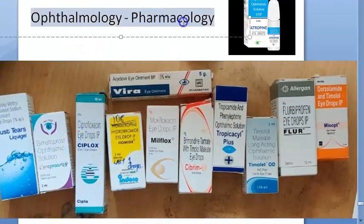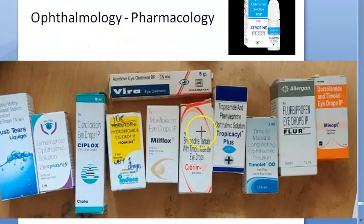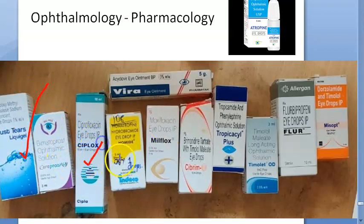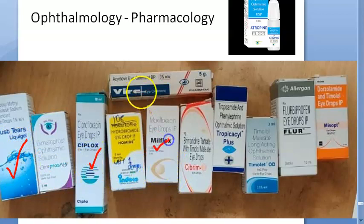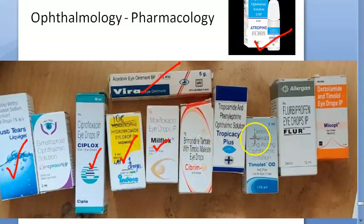So to recap ophthalmology pharmacology: artificial tears — carboxymethylcellulose. Antibiotics — ciprofloxacin and moxifloxacin, both fluoroquinolones. Antiviral — acyclovir. Cycloplegics — atropine and homatropine. Mydriatics — tropicamide and phenylephrine.